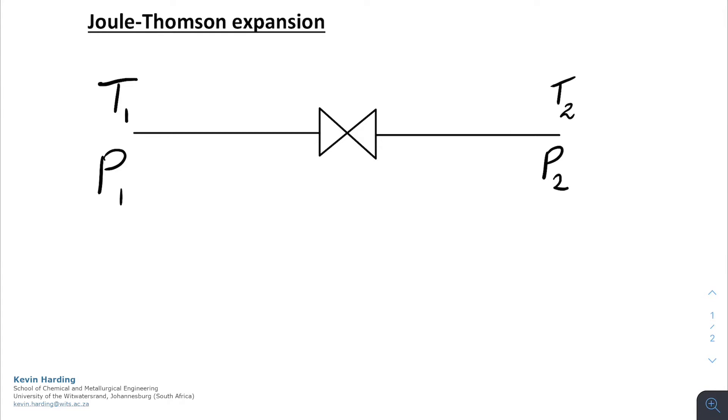If we have a gaseous system coming in at high pressure P1 and temperature T1, and it goes through an expansion valve thereby reducing the pressure—it does it either so quickly or such that Q is zero, it's that well insulated—and it comes out at a reduced pressure P2 and temperature T2, what can we work out or deduce from this system?